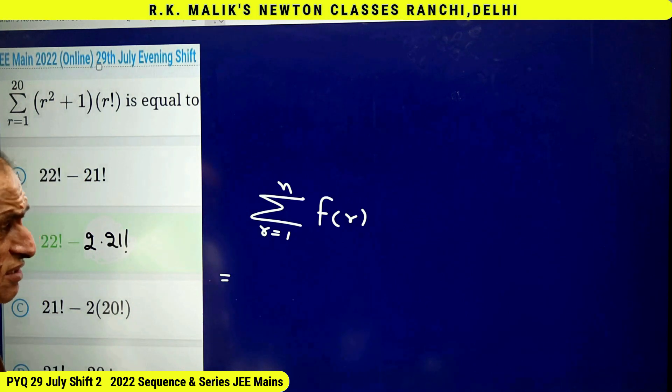Many times there is a standard way for converting f(r) into this form, and if the question is not in standard form then you have to use common sense. Presently this question is in standard form. Once you have this, start putting the value of r — you get g(2) minus g(1), plus g(3) minus g(2), and so on up to g(n+1) minus g(n).